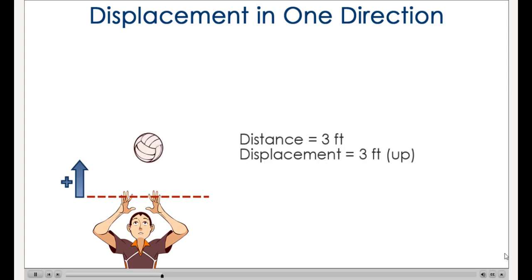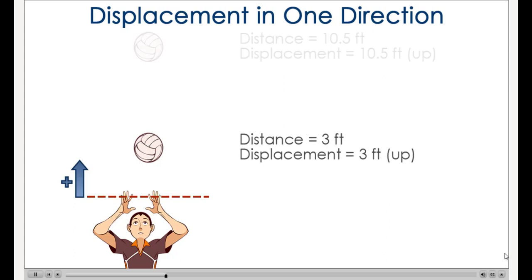Again, the magnitude of the distance and displacement are the same as the ball continues to move up. Now the ball is at the top of its motion path and begins its descent. The distance the ball has traveled is 10.5 feet and the displacement is also 10.5 feet up since the distance between the starting position and the position of the ball is 10.5 feet and still in a positive direction.